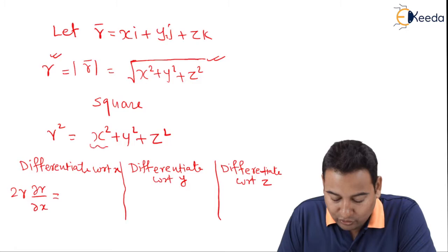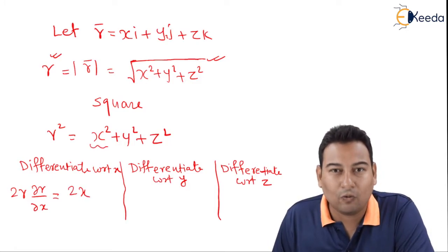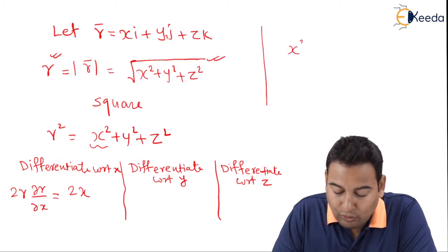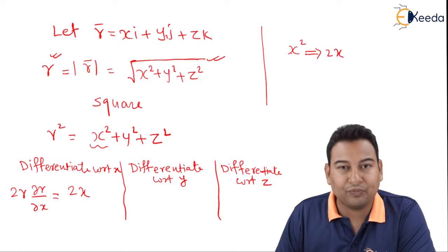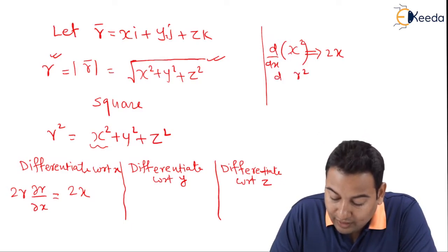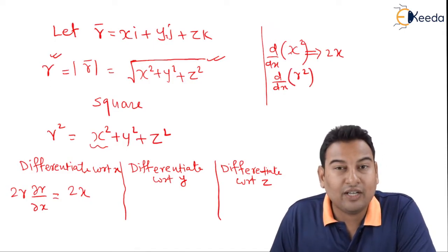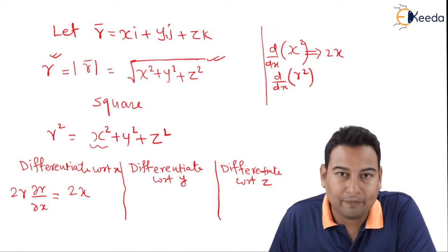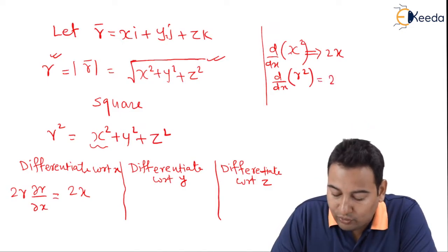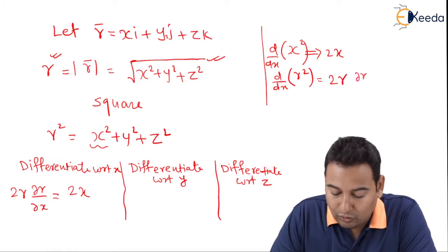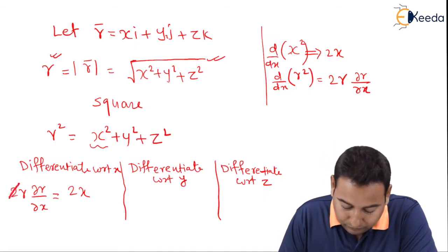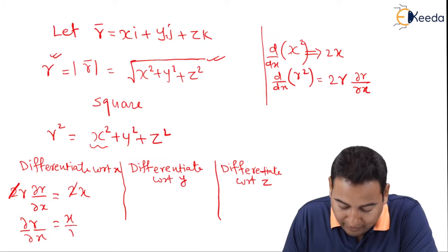On the right-hand side, the derivative of x² is 2x, while y² and z² derivatives with respect to x are 0. Note that when differentiating r² with respect to x, we apply the chain rule: derivative is 2r·(∂r/∂x). Cancelling the 2s gives ∂r/∂x = x/r.